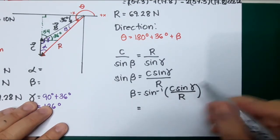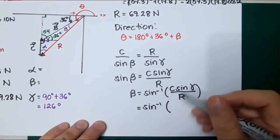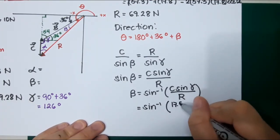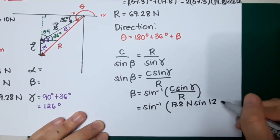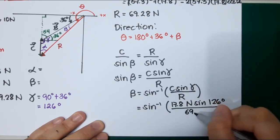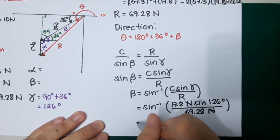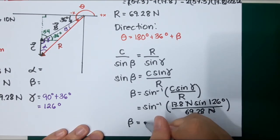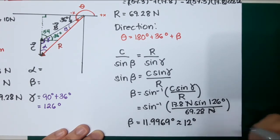Let's substitute. That will be R sine, what is C is 17.8 Newton, sine 126 degrees, divided by 69.28 Newton. So the beta now is 11.9969 degrees, or roughly this is 12 degrees.